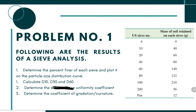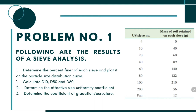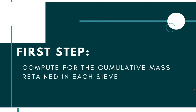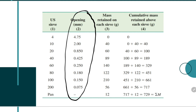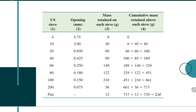We are asked to determine the uniformity coefficient and then determine the coefficient of gradation or curvature. First, we need to compute for the cumulative mass retained in each sieve. I just copied the table, and as you can see, I indicated the opening of each sieve, because later on as we plot it on the particle size distribution curve, we need to know the exact diameter of each sieve number. The third column is where you write the mass retained, and you add another column intended for the cumulative mass retained above each sieve.